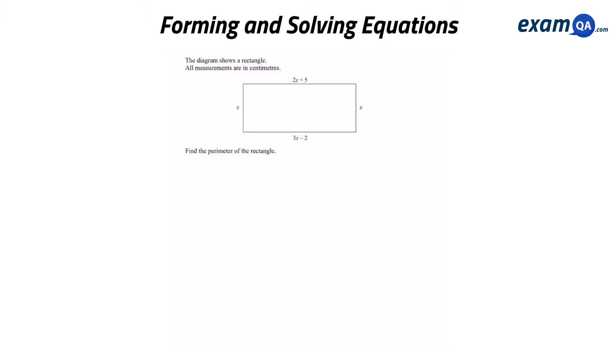So here we've got our first question. It says the diagram shows a rectangle. All measurements are in centimeters. Find the perimeter of the rectangle. Now it seems a bit strange when you first look at it because how are we supposed to find the perimeter when they haven't really given us much information?